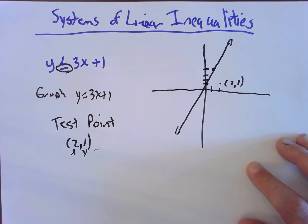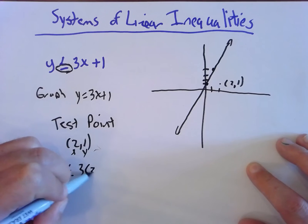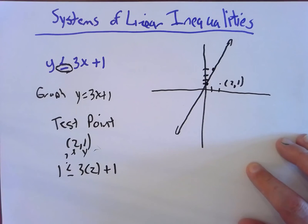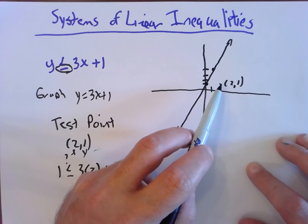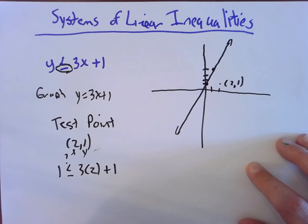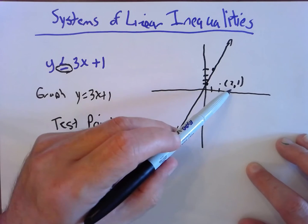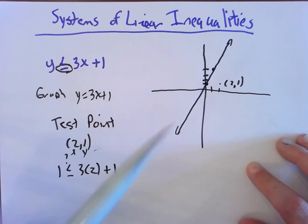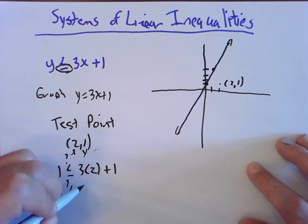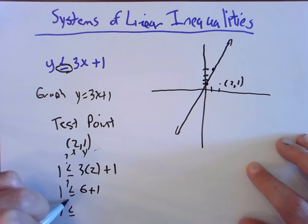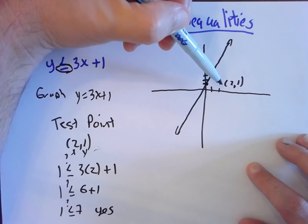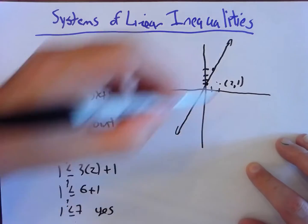We want to test if this point makes the inequality true or false. Plugging in: is 1 less than or equal to 3 times 2 plus 1? Is 1 less than or equal to 7? Yes, it is. That tells me this test point is on the half I'm supposed to shade. If I got a false statement, I would shade the other half.